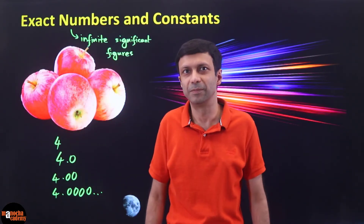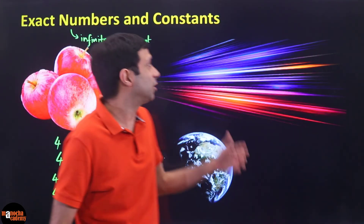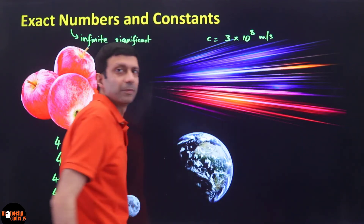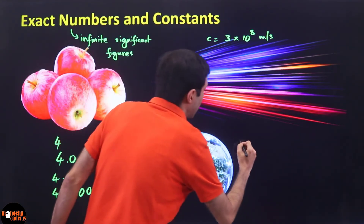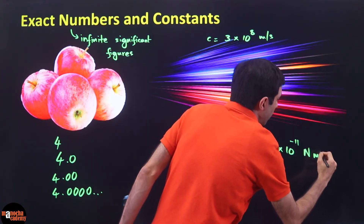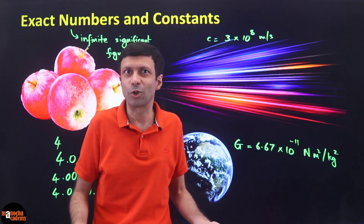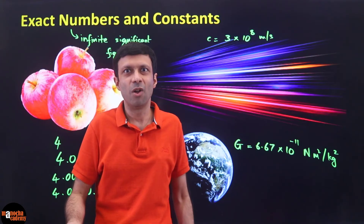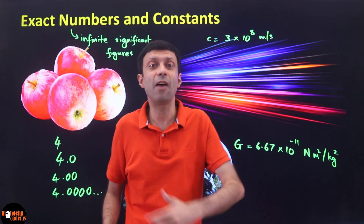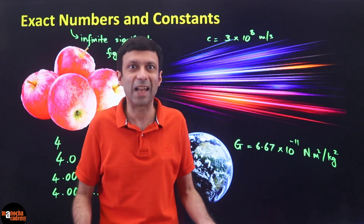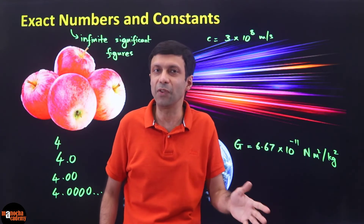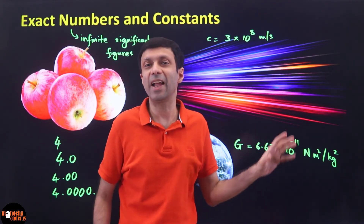Exact numbers have infinite significant figures. In scientific calculations, we often use constants like the speed of light C = 3 × 10⁸ m/s, or the gravitational constant G = 6.67 × 10⁻¹¹ N·m²/kg², or Avogadro's constant = 6.022 × 10²³. All these constants are defined with an exact value and are not subject to measurement errors. Therefore, they have infinite significant figures and can be used in calculations without any rounding or truncation.